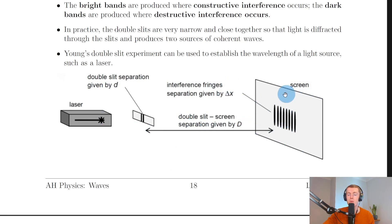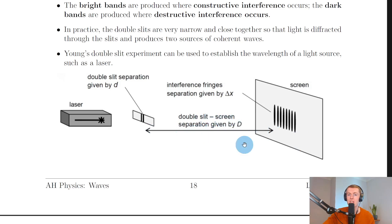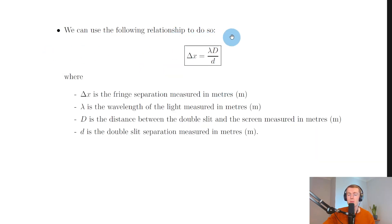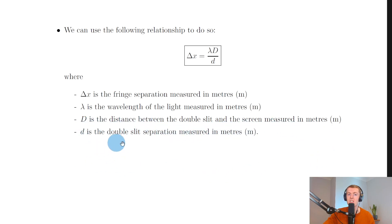In Young's double slit experiment we have variables for the different parts. The double slit separation is given by d, also known as the distance between the slits. The fringe separation is given by Δx, and the distance between the double slit and the screen is given by capital D. We can use the following relationship to find the wavelength: Δx = λD/d, where Δx is the fringe separation in meters, λ is the wavelength of the light in meters, capital D is the distance between the double slit and the screen in meters, and lowercase d is the double slit separation in meters.